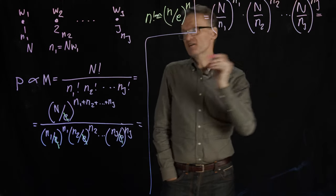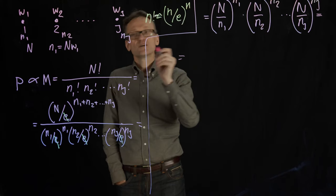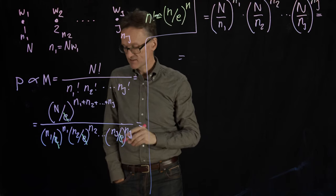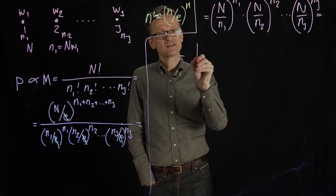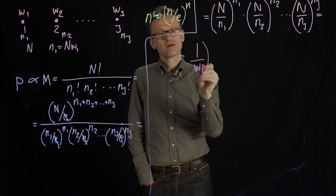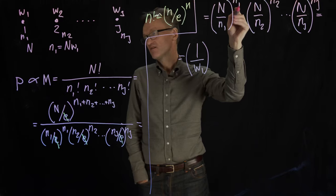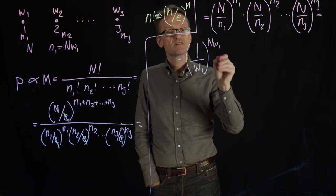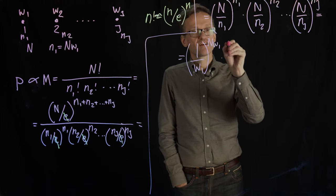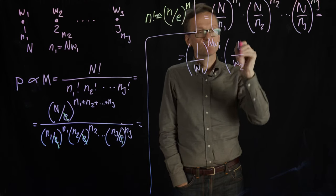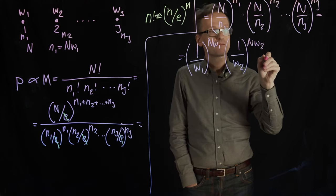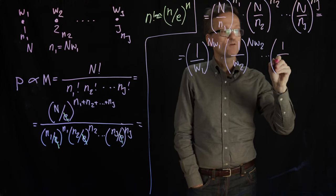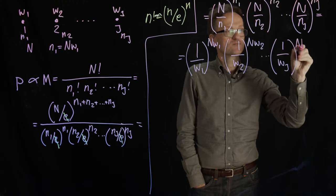But there are some things I can use. If I go back to my definitions and weights here, so uppercase N divided by lowercase n1, that's kind of the inverse of the first weight. So I'm going to write that as the inverse of weight 1. And then instead of n1 here, n1 was the total number of systems multiplied by weight 1. I know it doesn't look easier, but it will be.